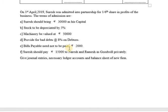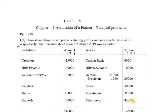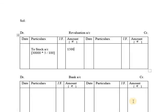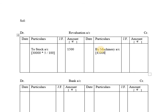Next, machinery is to be valued at 50,000, whereas the current machinery value in assets is 45,000. So the 45,000 item is to be made 50,000, meaning there is an increase in the value of machinery of 5,000. An increase in the value of an asset is recorded on the credit side. By machinery account — 5,000 will be recorded on the credit side.